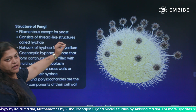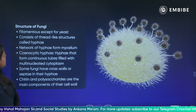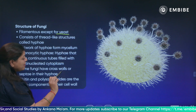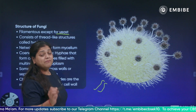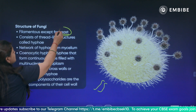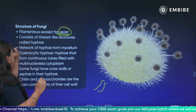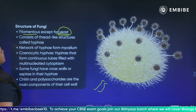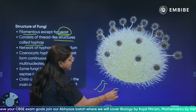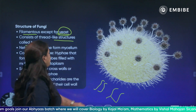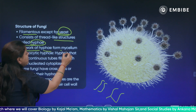Looking at the structure of fungi — they are generally filamentous, except for yeast. Their structure is like filaments. Yeast is unicellular, so it cannot be filamentous. Except for yeast, fungi are generally filamentous. They consist of thread-like structures called hyphae — remember the term hyphae.